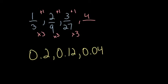So to get our next term, we've got to do twenty-seven times three, which is eighty-one. So our next term in the sequence would be four over eighty-one.